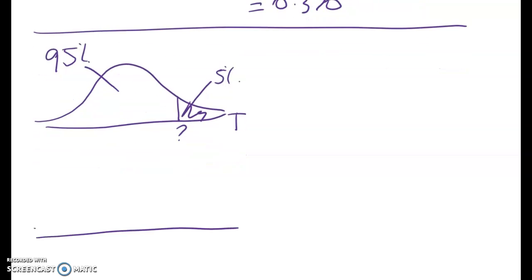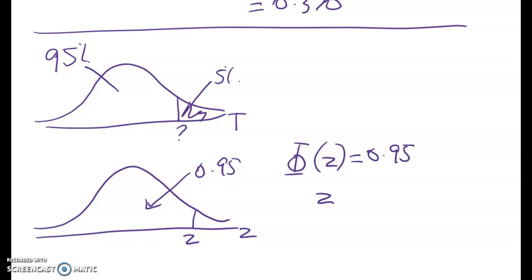So I can't do that with t but I can use my tables for z to say if I've got 0.95 in here what's the z value? So what I'm looking for is this phi of z is equal to 0.95 and that gives me a value of z of 1.645.